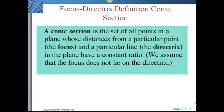We've got a new definition, an expanded definition of a conic section. Any conic section is a set of all points in a plane whose distance from the focus and the directrix have a constant ratio.